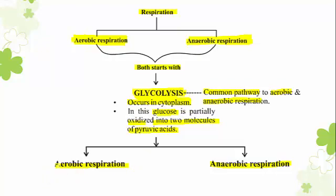Now let us have a look at what happens to the pyruvic acid when it enters into aerobic respiration and what happens when it enters into anaerobic respiration. Both respiration processes start with the common pathway called glycolysis, which takes place in the cytoplasm. During glycolysis, one molecule of glucose is broken down into two molecules of pyruvic acid.